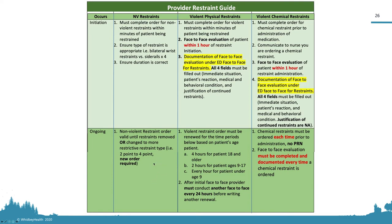For ongoing nonviolent restraints, a new order is required every 24 hours. For violent restraints, a new order is required every four hours — every two hours for ages nine to seventeen, and every hour for under age nine. While a daily face-to-face is not required at this facility, it is best practice. For chemical restraints, a new order and new face-to-face are required with each administration, since each is considered a separate event.